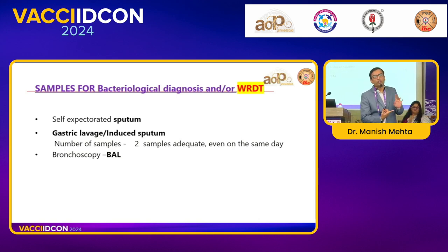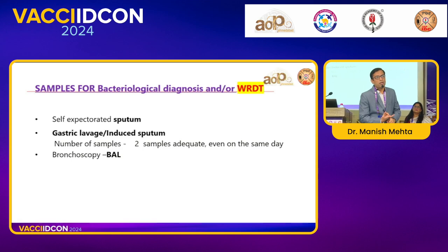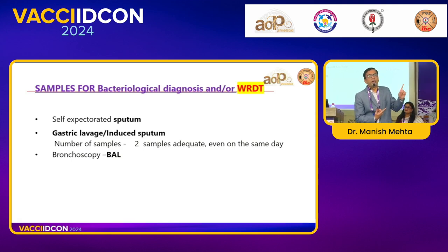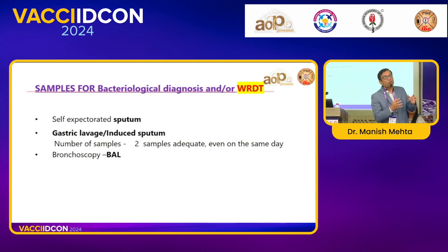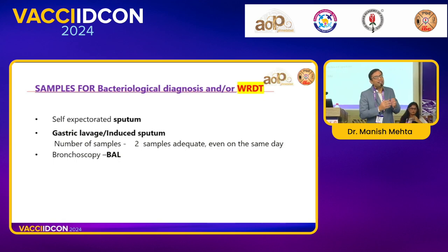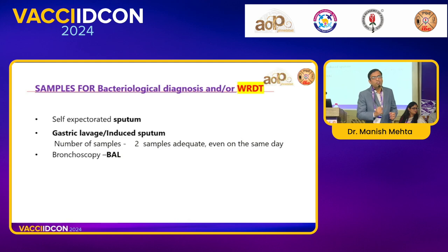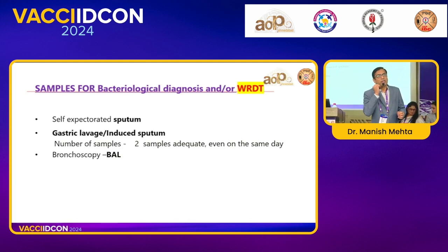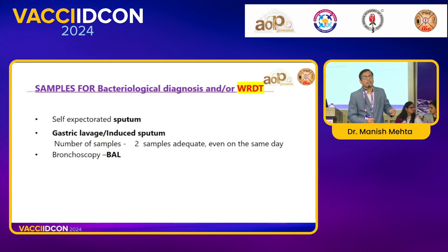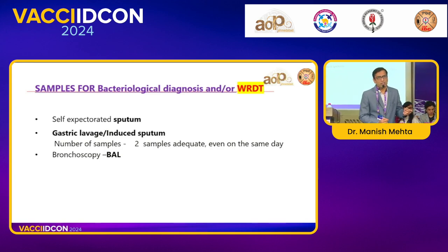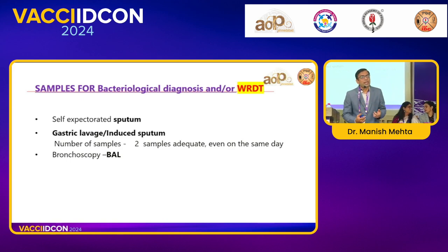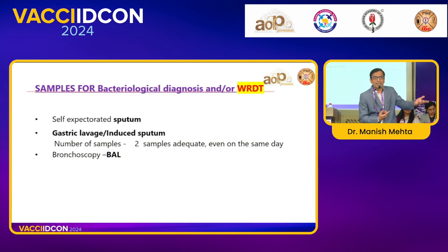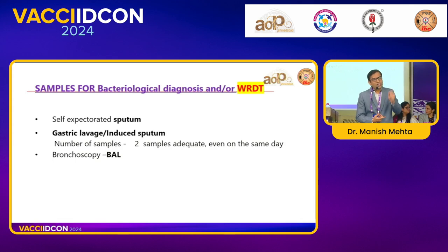CBNAAT gives straight-away diagnosis and rifampicin sensitivity or resistance. Culture is very important — previously we used solid media LJ culture taking months, but now we have liquid media culture MGIT (Mycobacterial Growth Indicator Tube), which gives results in 2-3 weeks. Why must culture be done? CBNAAT only tests rifampicin resistance, but MGIT also gives isoniazid resistance, which is also increasing. Additionally, we have seen cases where CBNAAT is negative but MGIT comes positive after two weeks. So all three tests — smear, CBNAAT, and culture — must be sent for whatever sample you send.